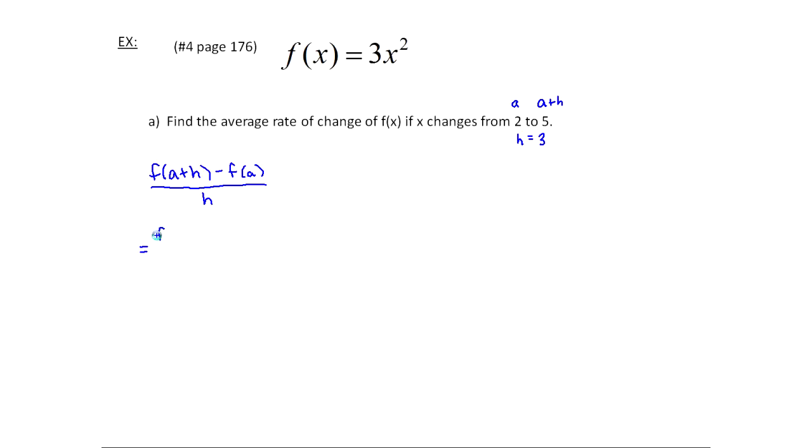So this will be f, a plus h, remember, is your larger value, so it's in this case 5, f(5), minus f of, and then that's a smaller value, 2. And then h is the difference between the two x values, so in this case it's 3. Now f is the function up here, so I've got to plug the 5 in. And so this is going to be 3 times 5 squared. And same thing here, f(2), I've got to plug 2 into the function, so minus 3 times 2 squared.